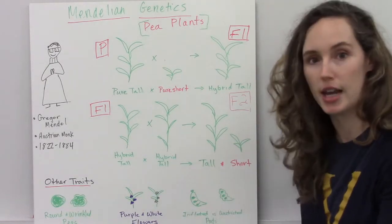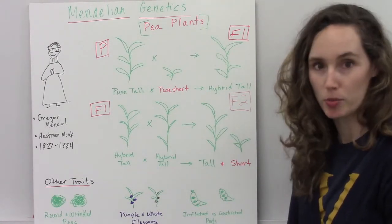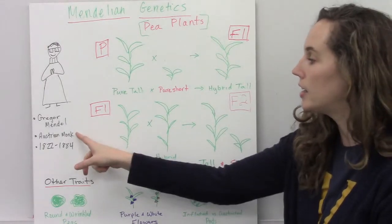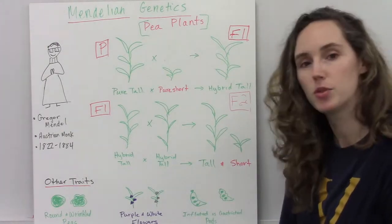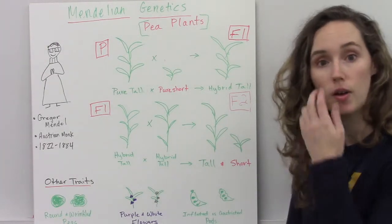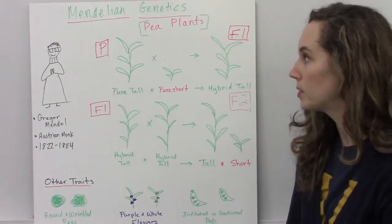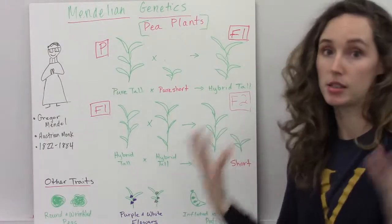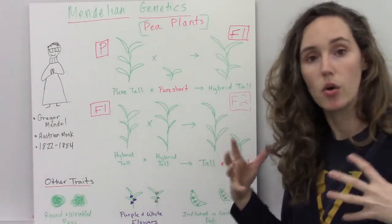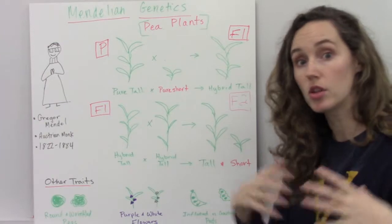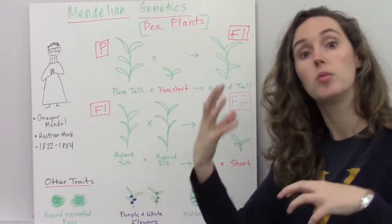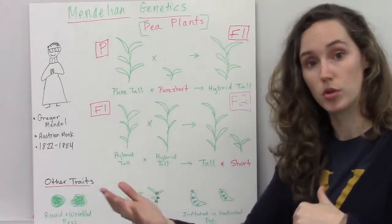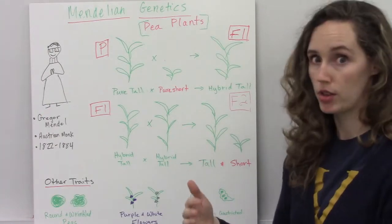The father of genetics is a man named Gregor Mendel. He was an Austrian monk and lived between the years 1822 and 1884. He spent his time at the monastery breeding pea plants together, and in doing so, he started to notice patterns when he bred plants of certain traits with plants with other traits.